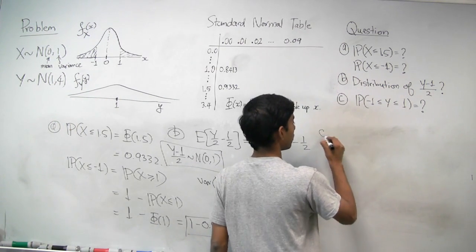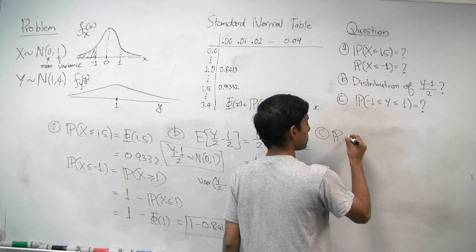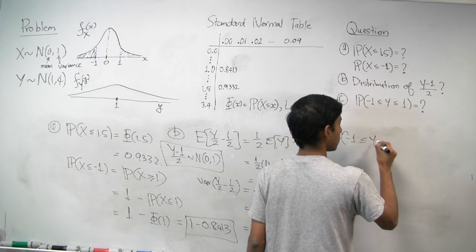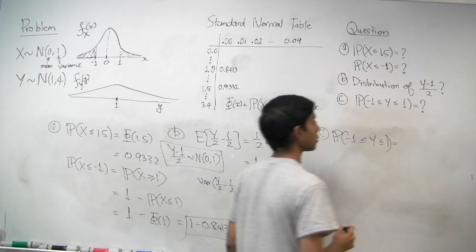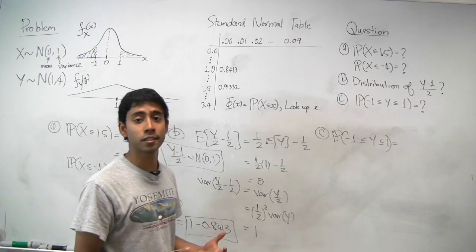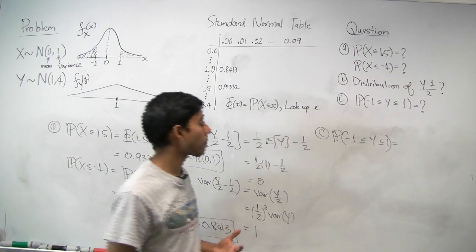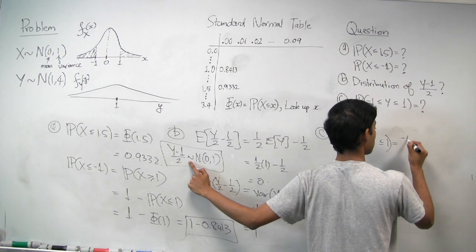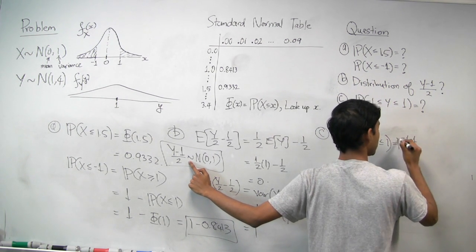So for Part C, we want the probability that Y is between negative 1 and 1. So let's try to massage it so that we can use the standard normal table. And we already know that this is standard normal, so let's subtract both sides by negative 1.